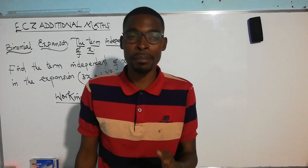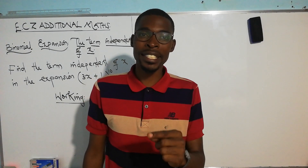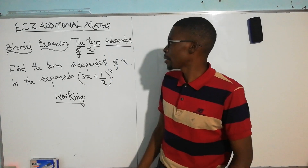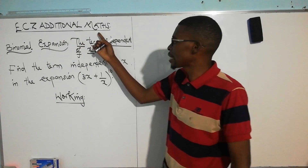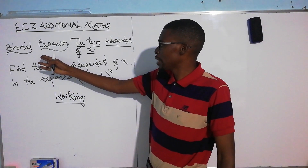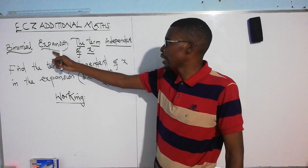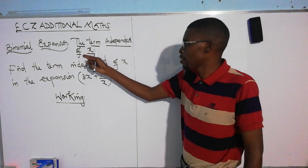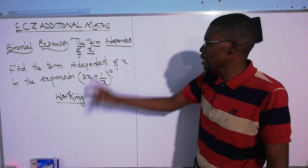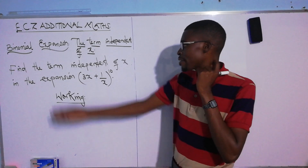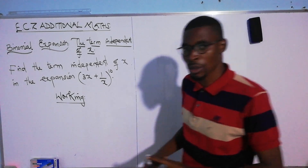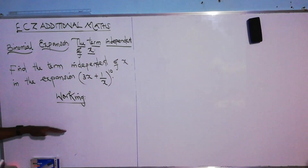Hello viewers, this is Mr. Banda, Mathematics Made Easy. In today's lesson we have a concept from the ECZ Additional Mathematics Syllabus D. The question comes from the topic called Binomial Expansion. The concept is based on the term independent of X. The question says: find the term independent of X in the expansion of (3x + 1/x)^10. This is from the 2020 specimen question.